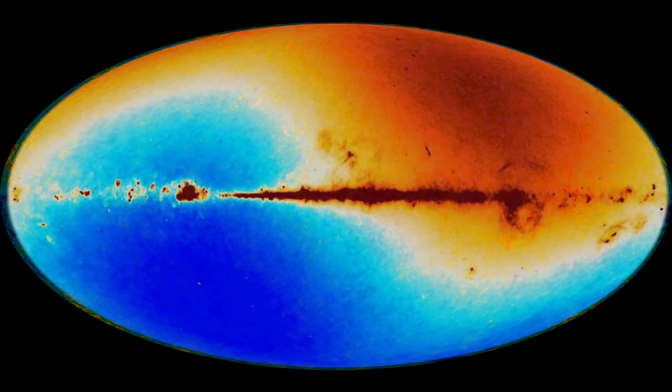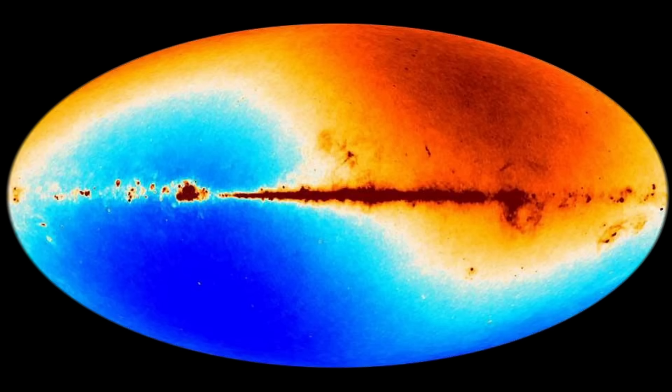This gradient is interpreted as a Doppler effect. As we move through the photon bath, radiation in the direction of our motion is blue shifted, and in the opposite direction it is redshifted. The result is called the CMB dipole.